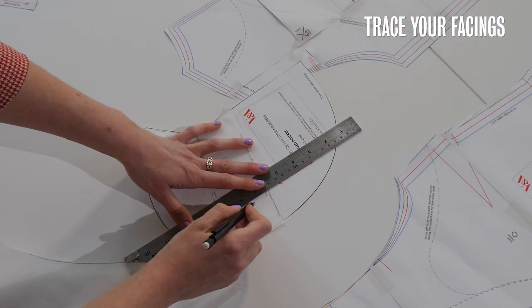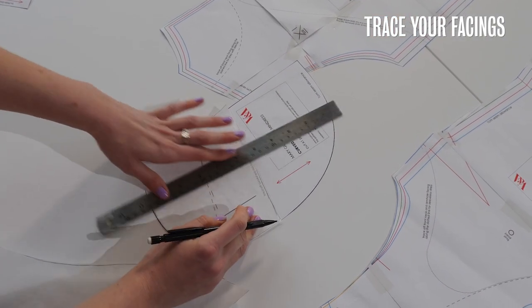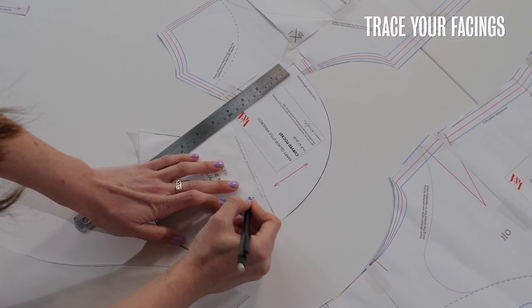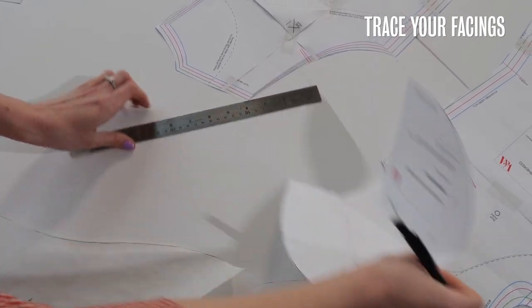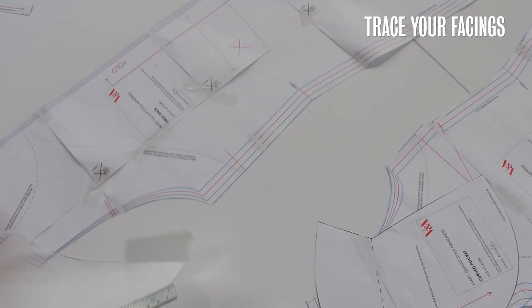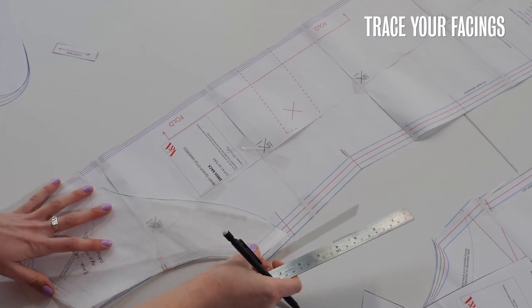Okay so the final thing that we need to do on the facing is just make sure that we've marked on the grain line in some way and the grain line is how you make sure that your pattern pieces are going to lay flat on the fabric and your garment will hang straight.